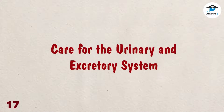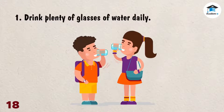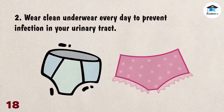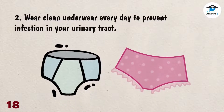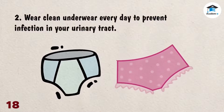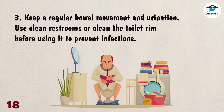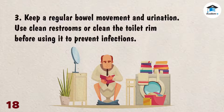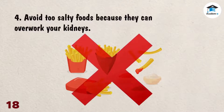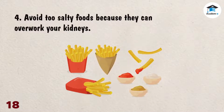Care for the urinary and excretory system. Drink plenty of glasses of water daily. Avoid delaying thirst — thirst is a signal that your body needs more water. Wear clean underwear every day to prevent infection in your urinary tract, as unclean underwear may become breeding places for harmful bacteria. Keep a regular bowel movement and urination. Use clean restrooms or clean the toilet rim before using it to prevent infections. Avoid too salty foods because they can overwork your kidneys.